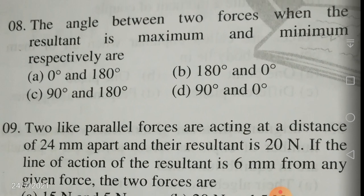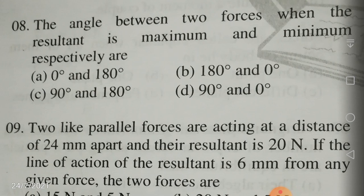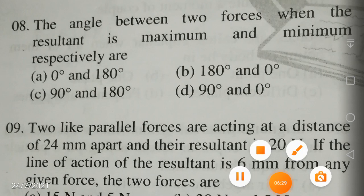The angle between two forces when the resultant is maximum and minimum respectively — the maximum resultant is obtained when the forces are collinear, and the minimum resultant is obtained when the forces act in opposite directions, that means when the angle between them is 180 degrees. So maximum and minimum are obtained when the angle between the forces is 0 and 180 degrees respectively. Your answer is A.